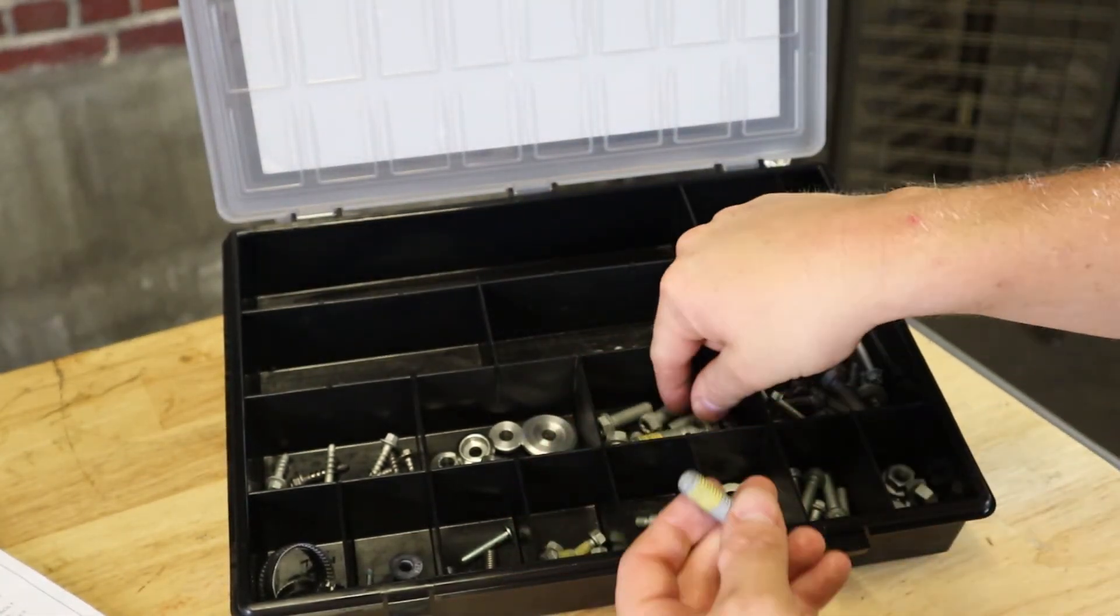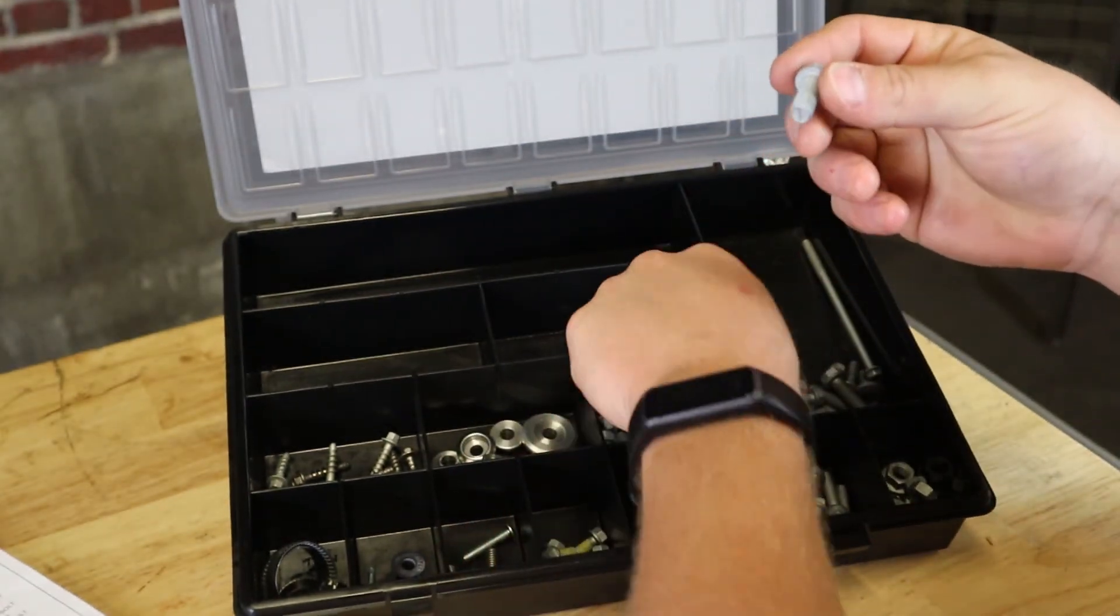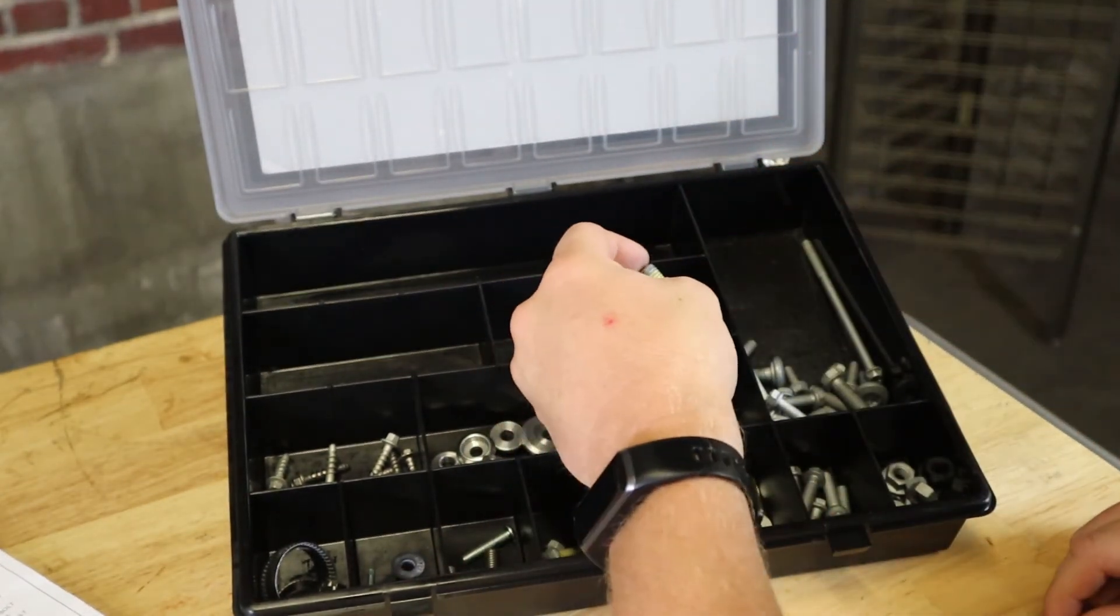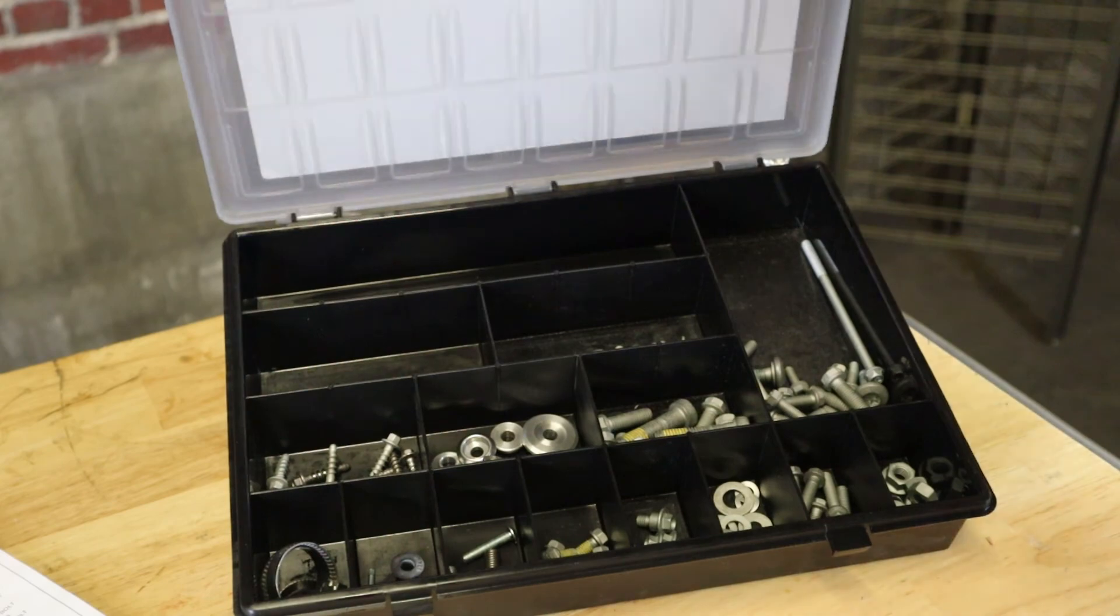Moving over here, we've got some bigger stuff. We've got M10s and another assortment of M8s. So yeah guys, that is the KTM Power Parts Bolt Kit.